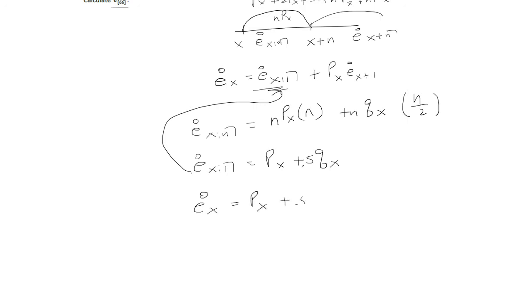That'll be PX plus half QX plus PX times E X plus 1. I'm going to leave the half QX in front and then I'm going to factor out a PX. I'll be left with 1 plus E to the X plus 1.